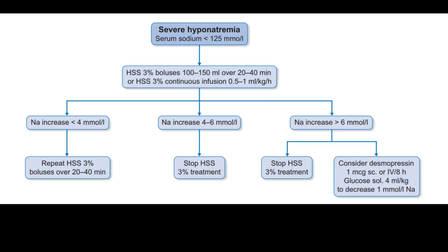For severe hyponatremia initial management: administer 3% NS, that is hypertonic saline, either as boluses of 100 to 150 milliliters over 20 to 40 minutes, or as a continuous infusion of 0.5 to 1 milliliter per kilogram per hour.